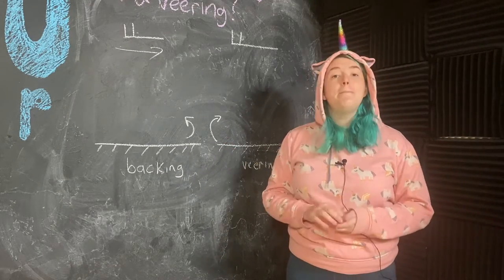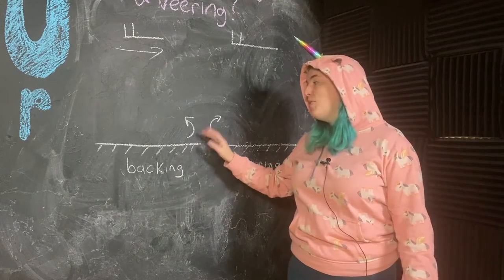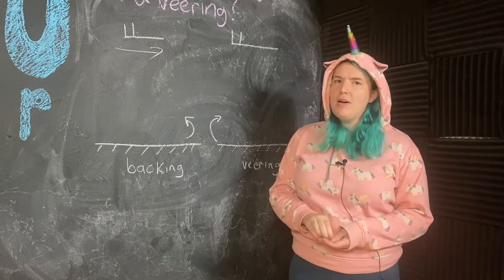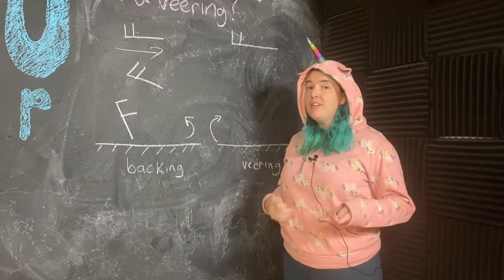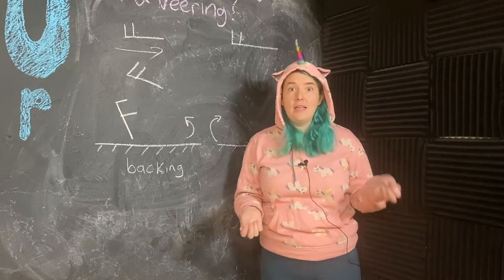Anyway, my backing pattern means winds rotate counterclockwise with height. So that would look something like this. And for veering it's going clockwise with height. So that looks something like this.